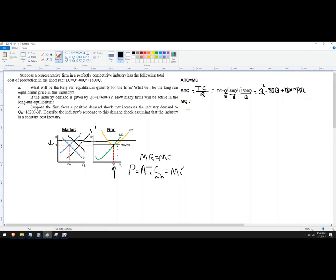Now, to find marginal cost, I'm going to take the partial derivative of this. So that becomes 2Q. No, it does not. It becomes 3Q squared minus 160Q plus 1800.